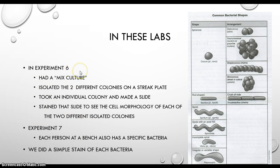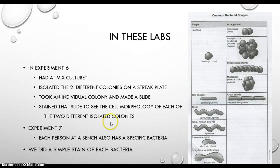Experiment 7 was to actually do the stain — you took the isolated colonies from experiment 6 and stained them. But you also had a specific bacteria assigned to each bench position, corresponding to letters A through G in the lab manual. So each person had a specific bacteria they had to stain as well. You're supposed to do one simple stain of an isolated colony from experiment 6 and one simple stain of the bacteria assigned to you in experiment 7.